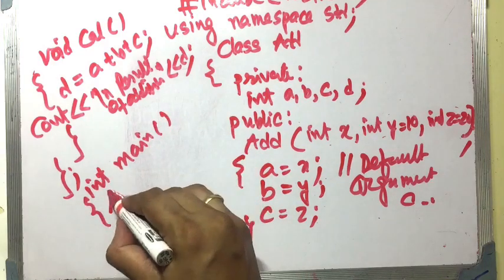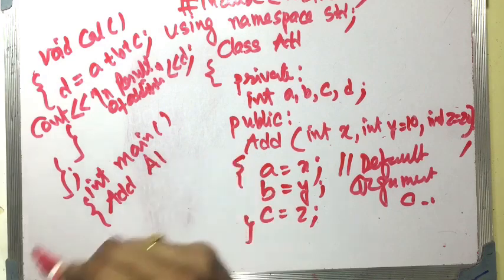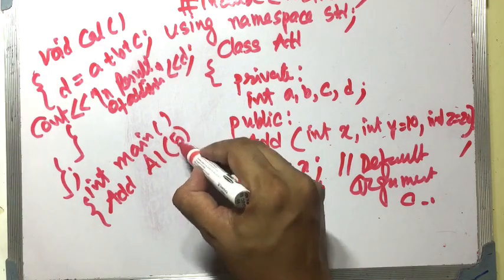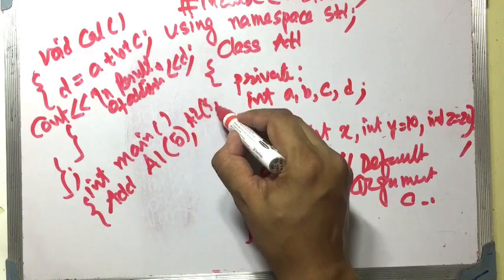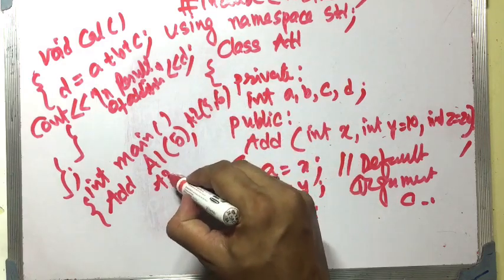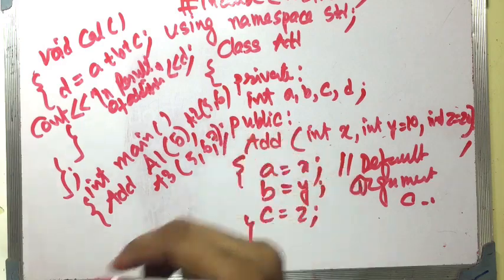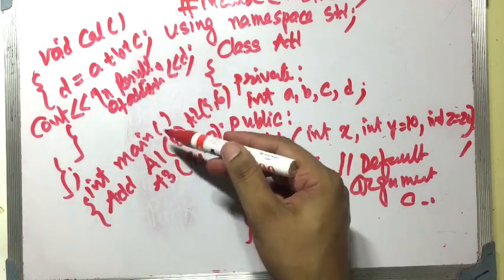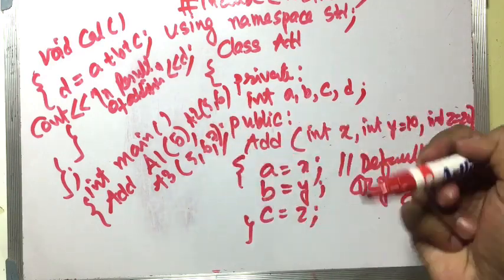Now in the main part, 'add' is the class name. We create object a1 with parameter 5, object a2 with parameters 5 and 6, and object a3 with parameters 5, 6, and 7.